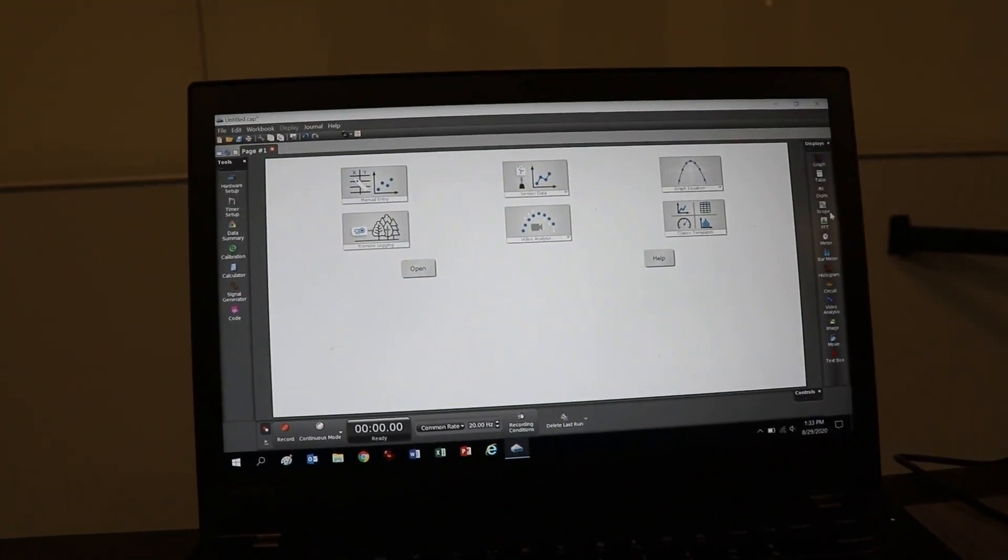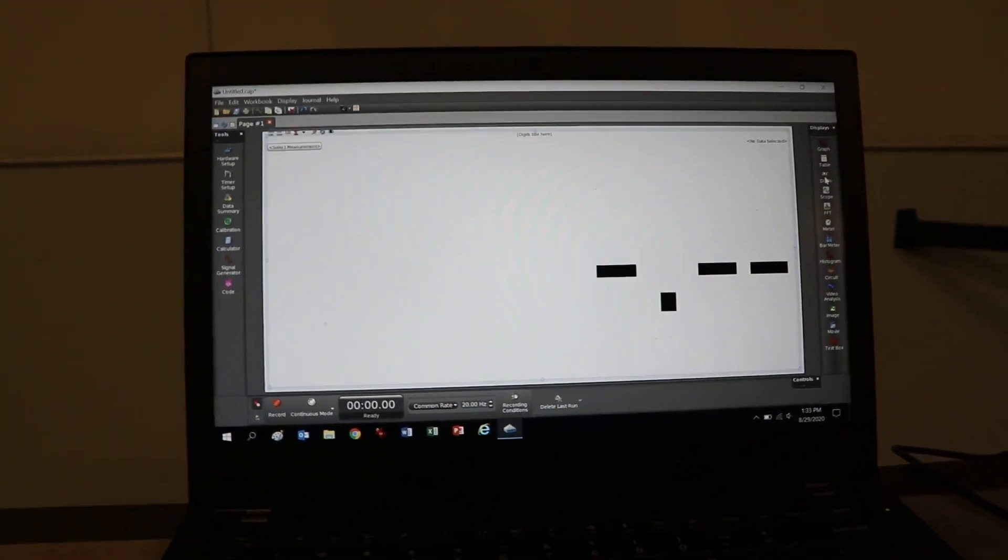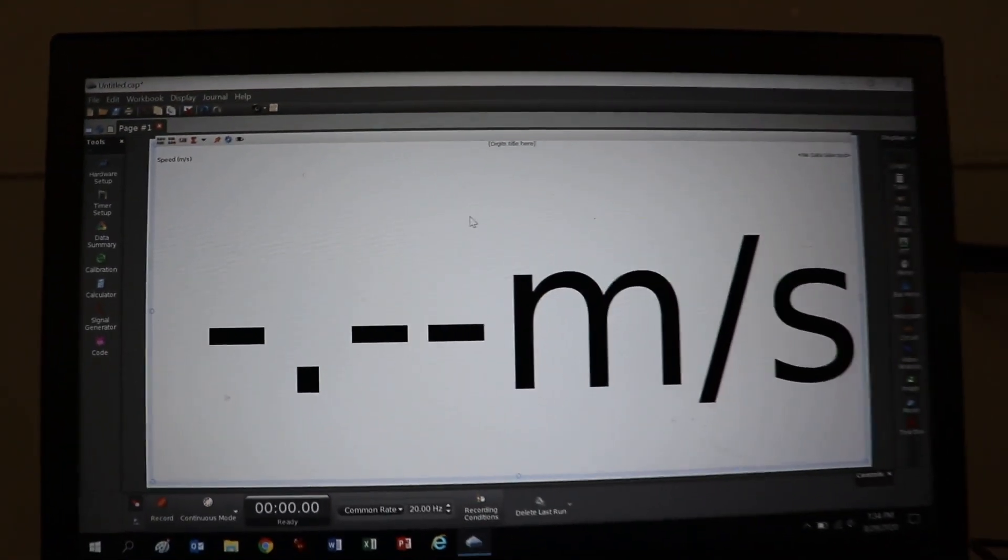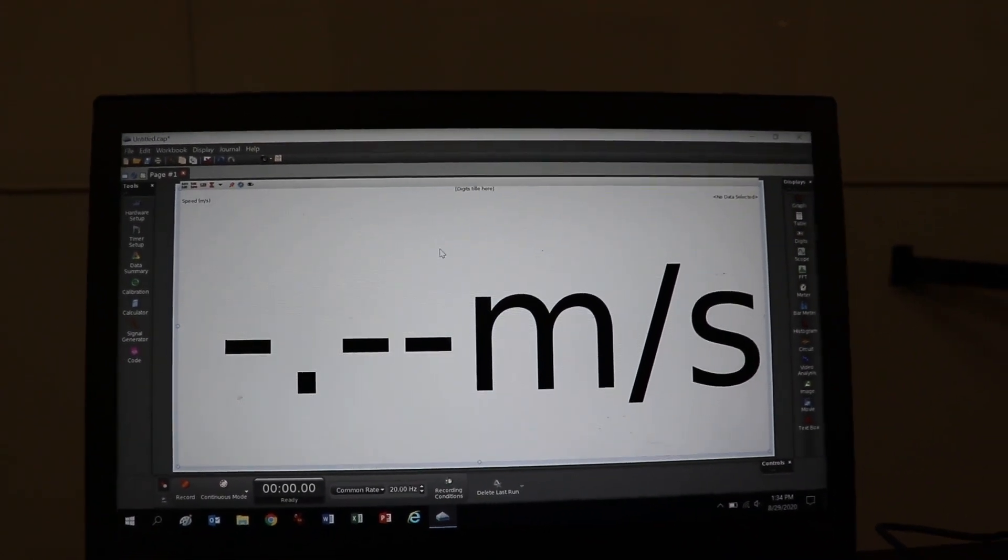And all we need is digits. So over here, we click on digits. We select the measurement. And we're going to go with speed. And it will give us the value each time we shoot it.